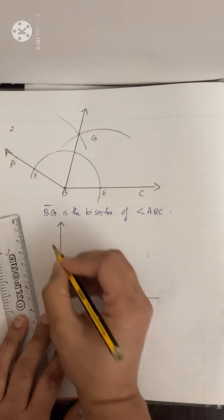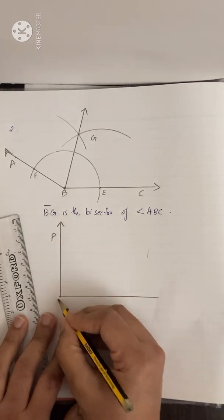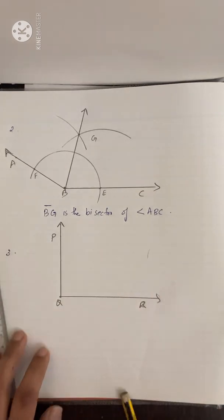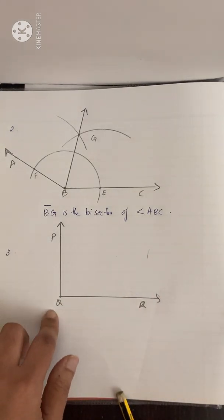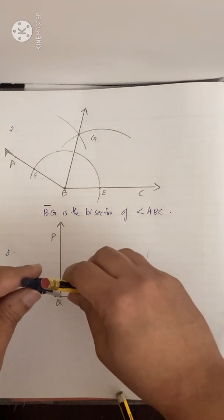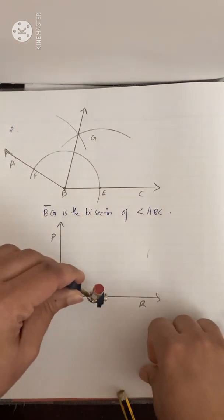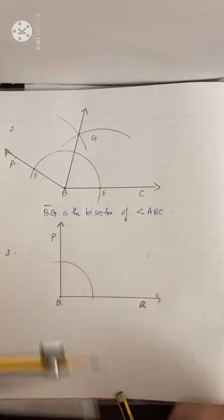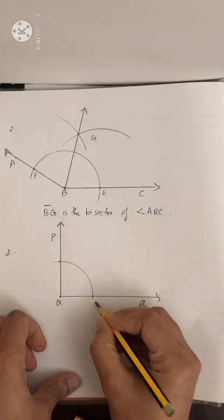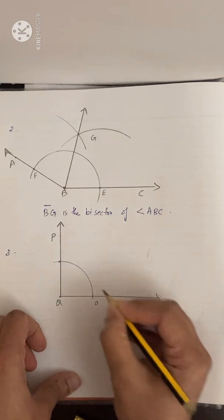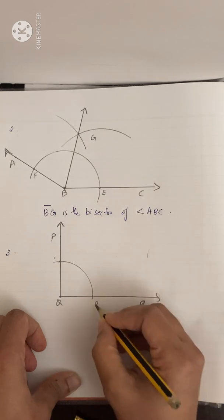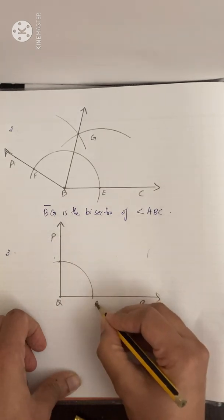You can name your angle as PQR. Now we have to construct its bisector, same as above. With Q as center, take a convenient radius and draw an arc. It should cut the two arms of the angle. Let the two cut points be A and B.